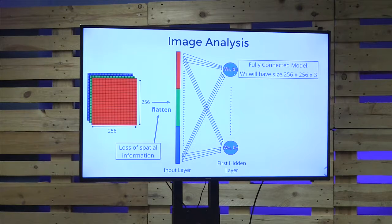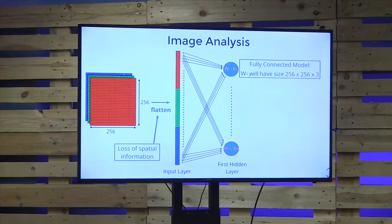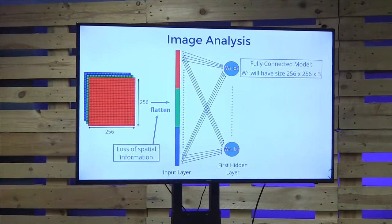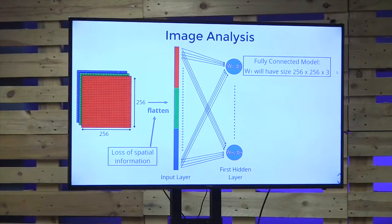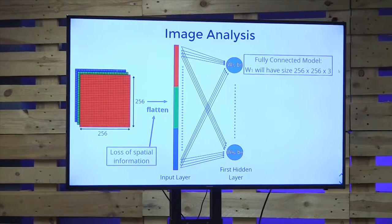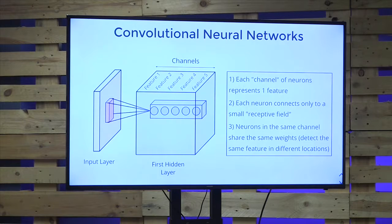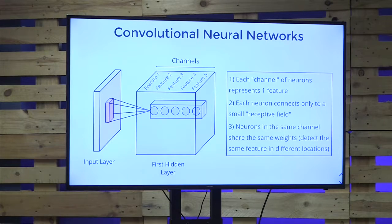That means just in the first neuron of the hidden layer, the weight array will have size 256 by 256 by 3. It just becomes enormous and computationally unfeasible, especially if you have larger images. Somebody called Yann LeCun came up with something called a convolutional network, and that has basically become the gold standard for image processing.